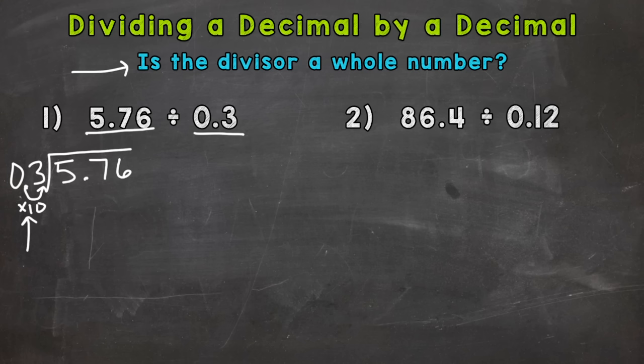We multiplied that outside number by 10, so if you do something to the outside number — the divisor — you have to do the same thing to the inside. Remember: whatever you do to the outside, you have to do to the inside. So we move the decimal once to the right on the dividend as well.